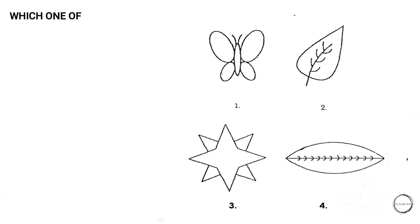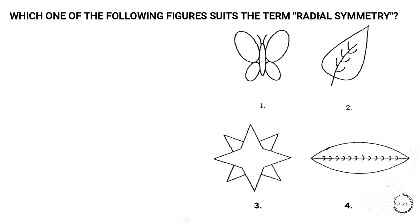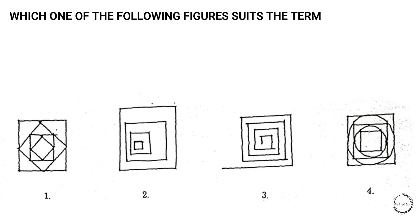Moving on: which one of the following figures suits the term 'radial symmetry'? You might feel it is the butterfly because it is symmetrical, but they have specifically mentioned radial symmetry, and hence the answer is option three.